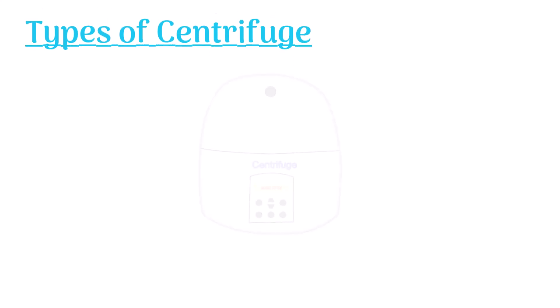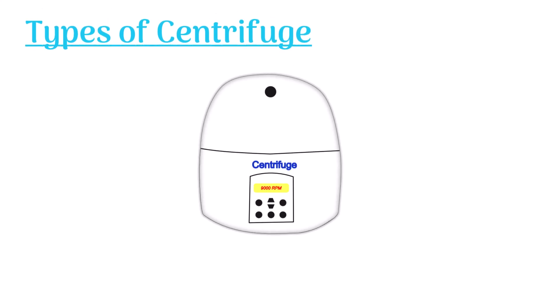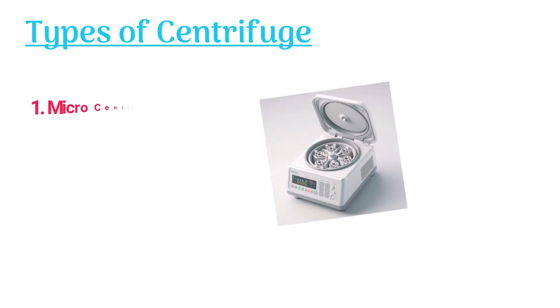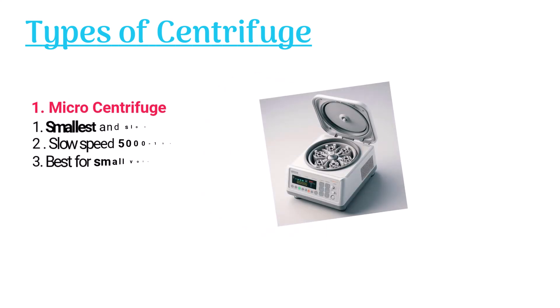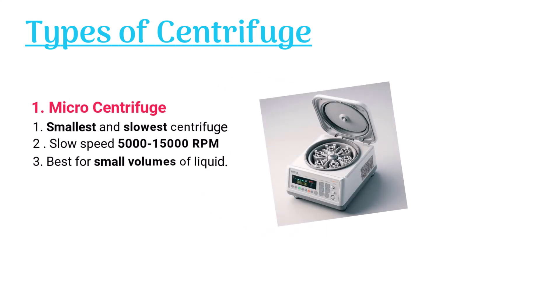There are different types of centrifuge based on their speeds. The micro centrifuge is the smallest and slowest type. It spins at a slow speed ranging from 5,000 to 15,000 rpm, and it is best for separating small volumes of liquid.